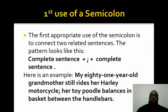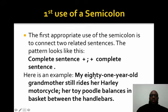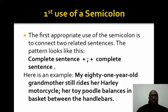This first slide is on the use of a semicolon. The first appropriate use of a semicolon is to connect two related sentences. The pattern looks like this: you have a complete sentence, then the semicolon, plus another complete sentence. For example: 'My 81-year-old grandmother still rides her Harley motorcycle; her toy poodle balances in a basket between the handlebars.' The semicolon serves as a conjunction in a sort of way, combining two sentences into one more complex sentence.